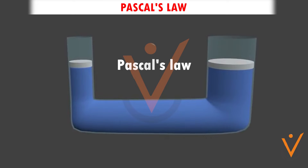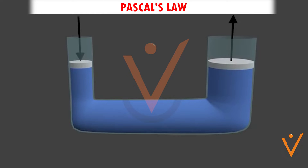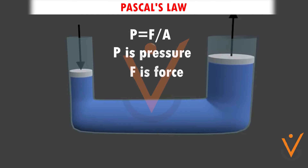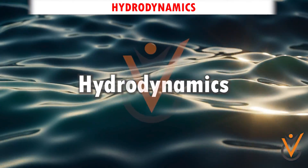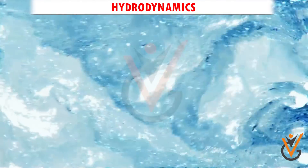According to Pascal's Law, any force applied to a confined fluid is transmitted uniformly in all directions throughout the fluid, regardless of the shape of the container. The formula for Pascal's Law is P equals F divided by A, where P is pressure, F is force, and A is area.